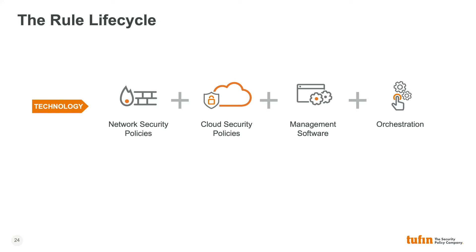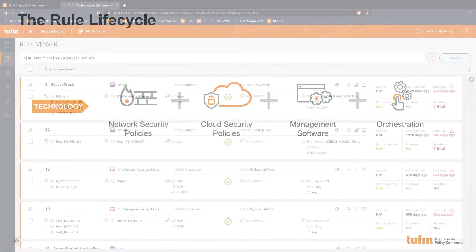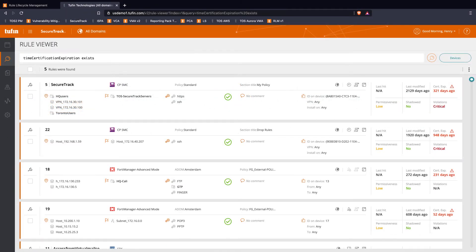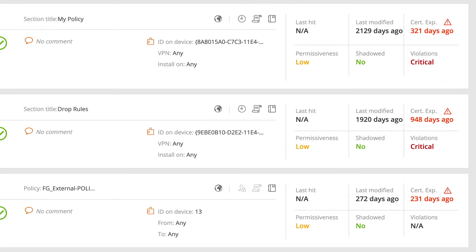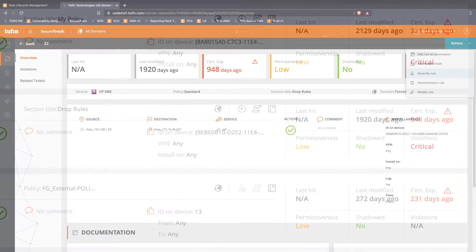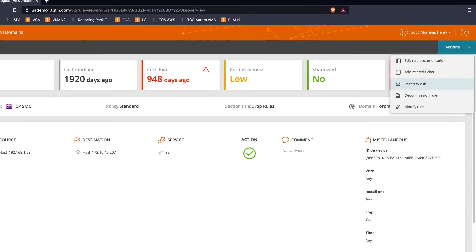When rules are created on firewalls or security groups, organizations often manage these policies through the firewall management console or hypervisor. However, enterprise networks that are large in scale and varied in vendor often use Tufin solutions to manage these security policies. SecureChange customers manage their policies for recertification by identifying them in SecureTrack and tracking them for certification prior to expiration, then take the appropriate action using SecureChange workflows.